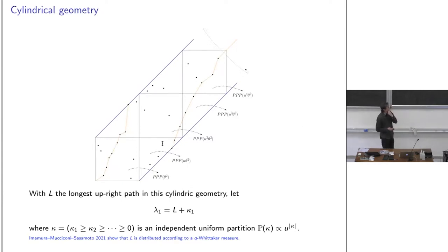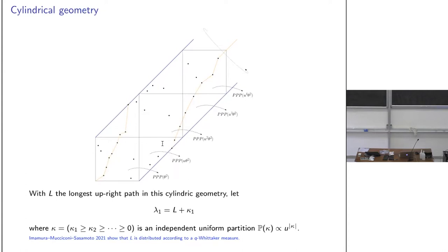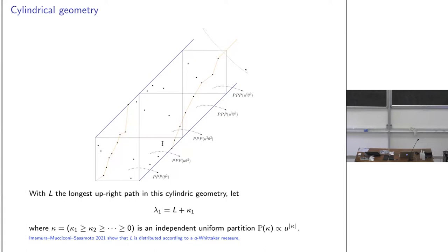Now consider a cylinder whose sides are identified, paved with squares. In each square there is a point process, but with varying intensities: θ² in the first square, uθ² in the next, u²θ² and so on. We look at the longest upright path going all the way to infinity. Almost surely the number of points on the cylinder is finite, so this length L is finite.